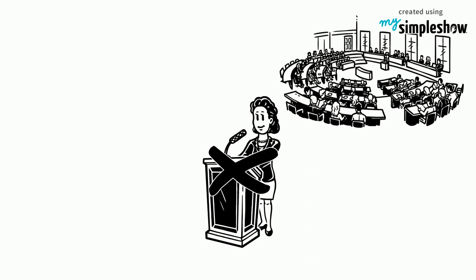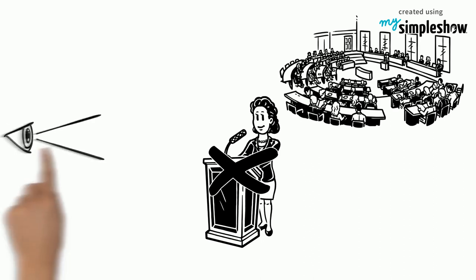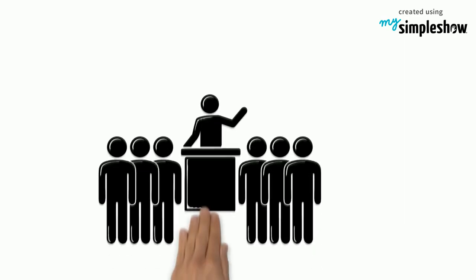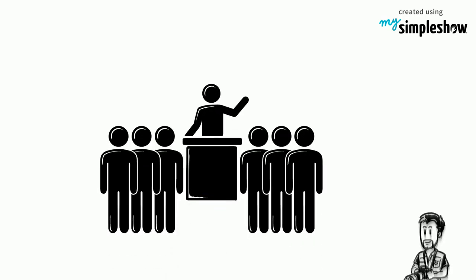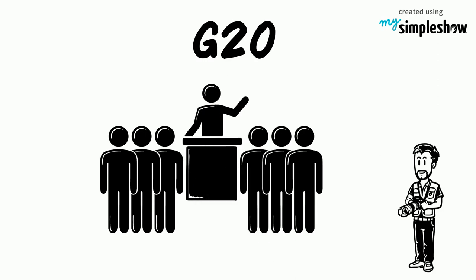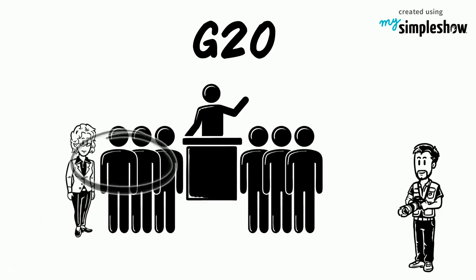The lack of female political leaders on the world stage is all too visible. You have to look no further than the 2017 family photo from the G20. Of the 36 people in the picture, only 4 were women.